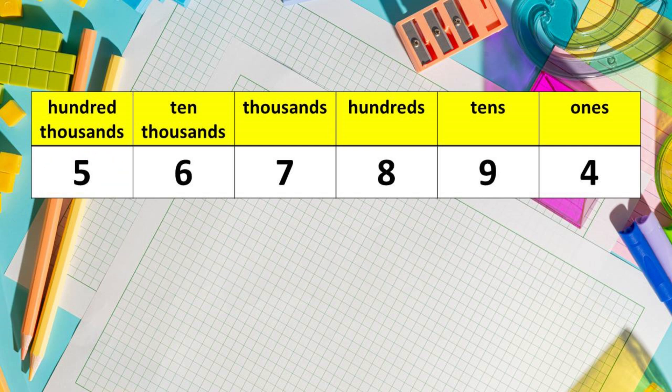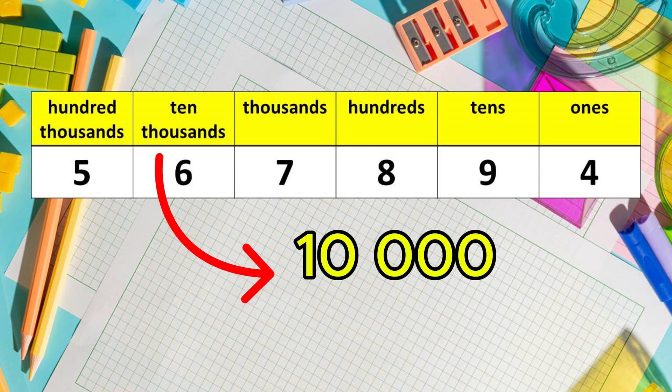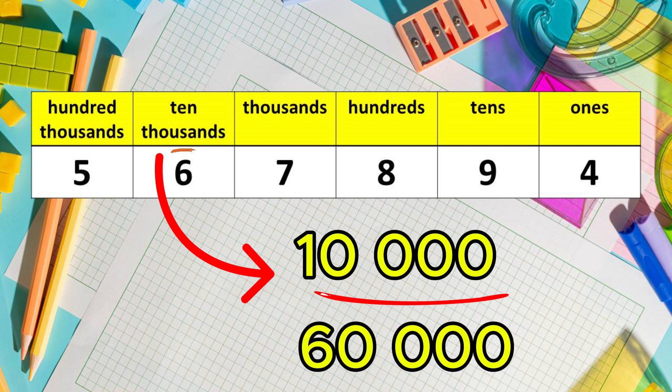How many zeros are there in 10,000? That's right. It has 4 zeros. Add these zeros to 6. 6 becomes 60,000. Its value is 60,000.